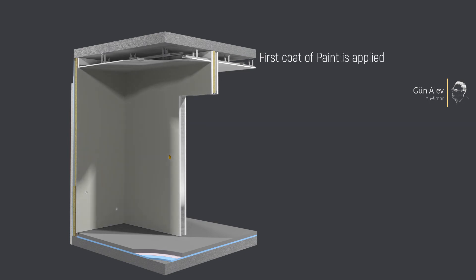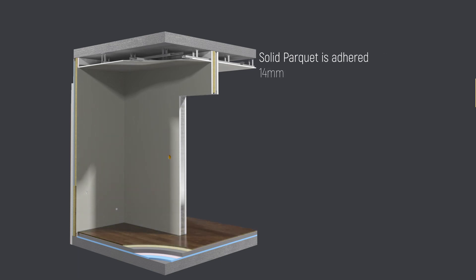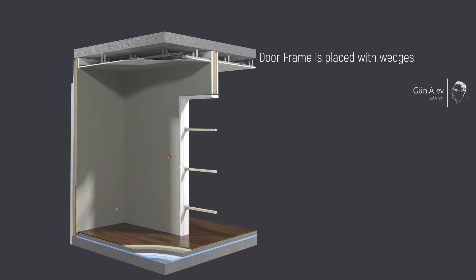First coat of paint is applied. Parquet adhesive is applied and parquet is adhered. Door frame is placed and fixed with polyurethane foam.